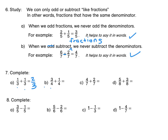For B, 3 quarters plus 1 quarter equals 4 quarters, or 1 whole. For C, 4 sevenths plus 2 sevenths equals 6 sevenths. Lastly, for D, 5 eighths plus 3 eighths equals 8 eighths, or 1 whole.